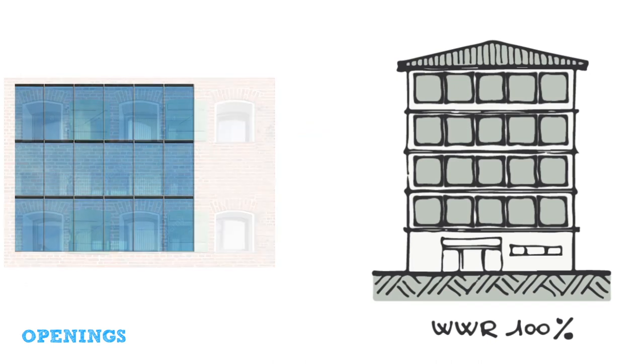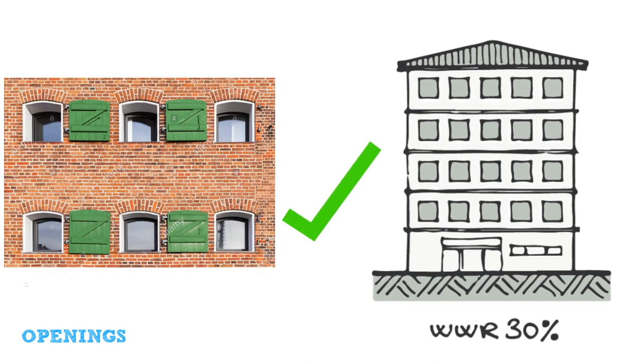The size of openings matters. The ratio of the size of the windows to the walls should not exceed 30%. This prevents unnecessary heat gain in buildings that will require energy to cool down.